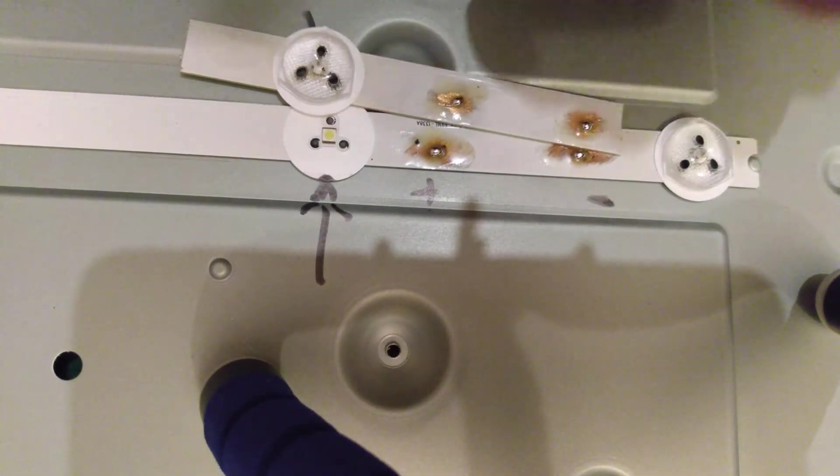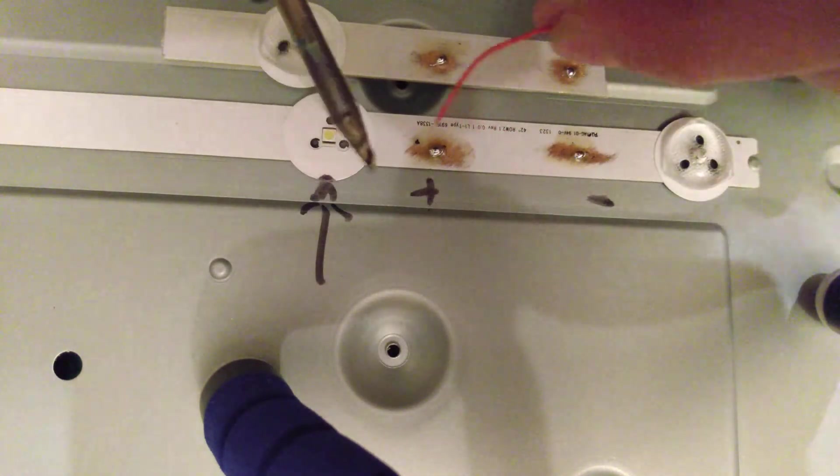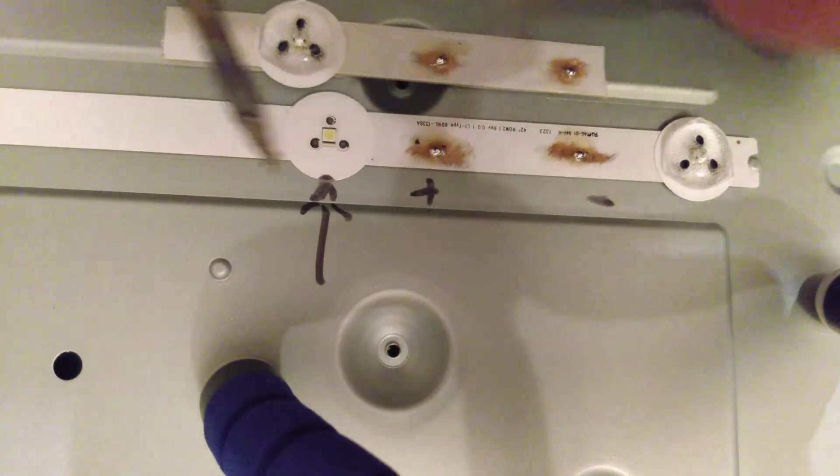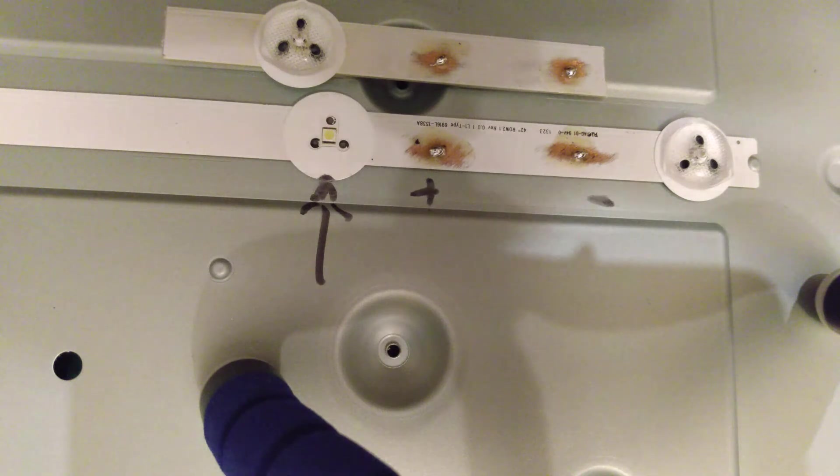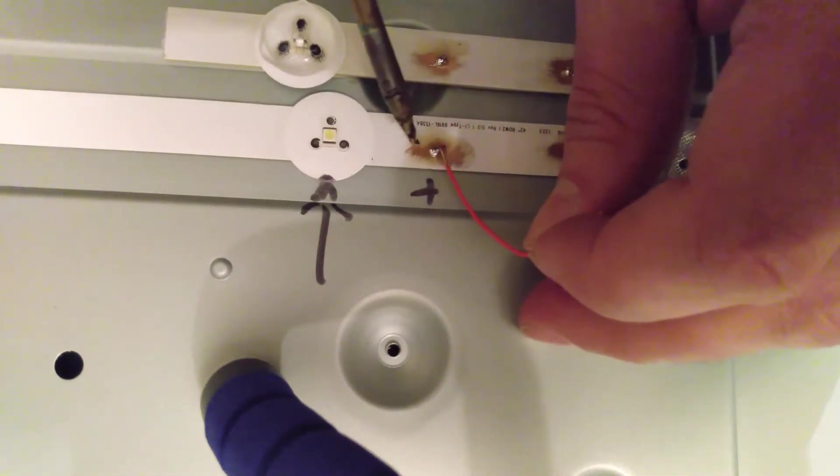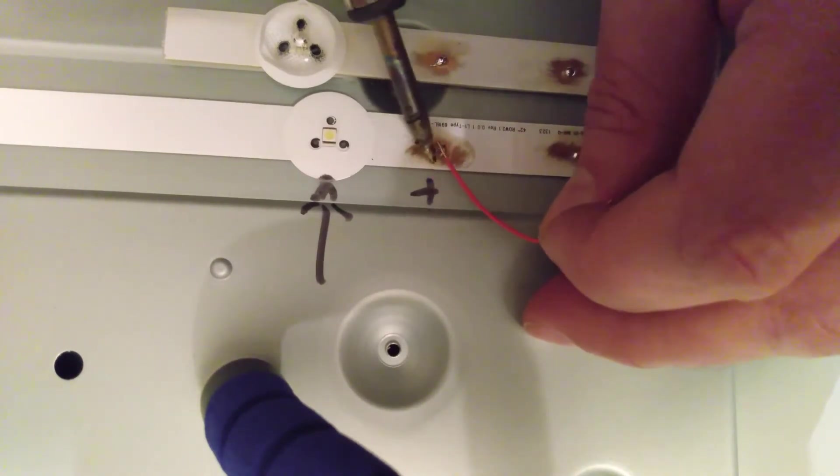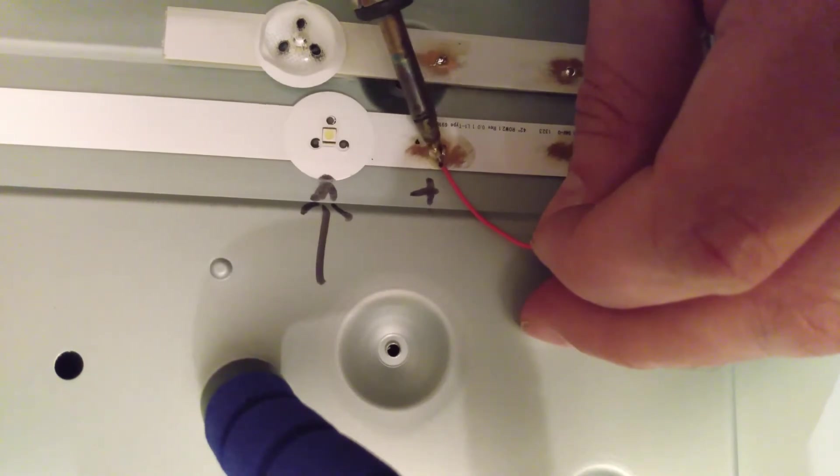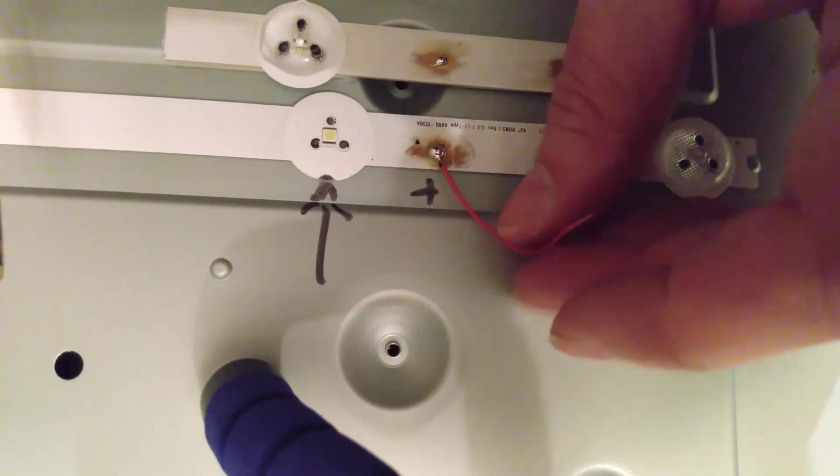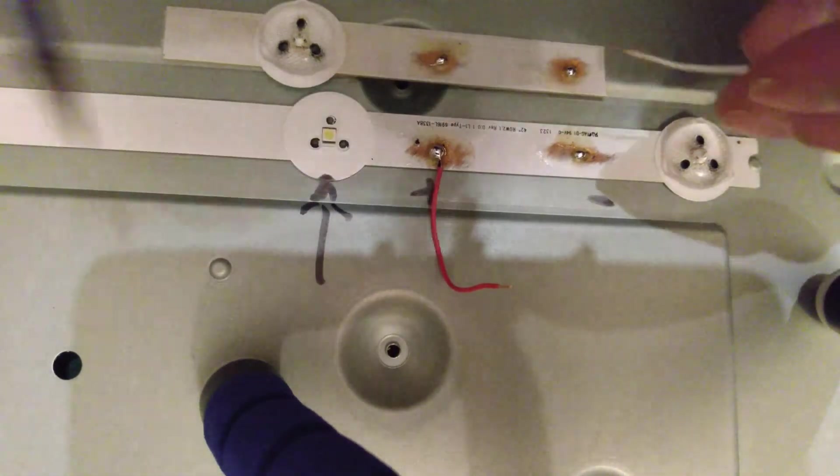Okay, right. So now let's stick the—I'm gonna use the red as the positive side. Yeah, I have to try and figure out where to bend the wire across as well. So I'm gonna put that bit on there first. Let's see if that will work. That's nice and solid, I think.